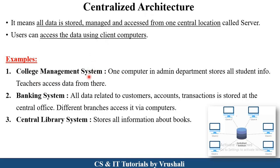For example, in a college management system, there is one main computer in the admin department that stores all department, student, and college information, and teachers can access the data from their own PCs. In a banking system, all customer data, account information, and transaction details are stored at the central head office, and all other branches access that data from their computers. In a central library system, all book information is stored on one computer so students can check availability.